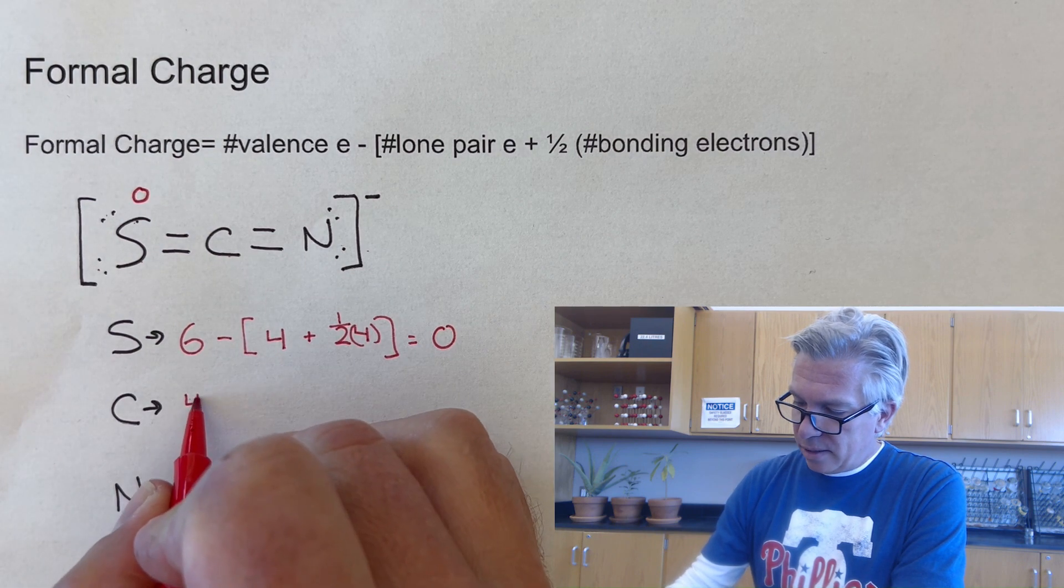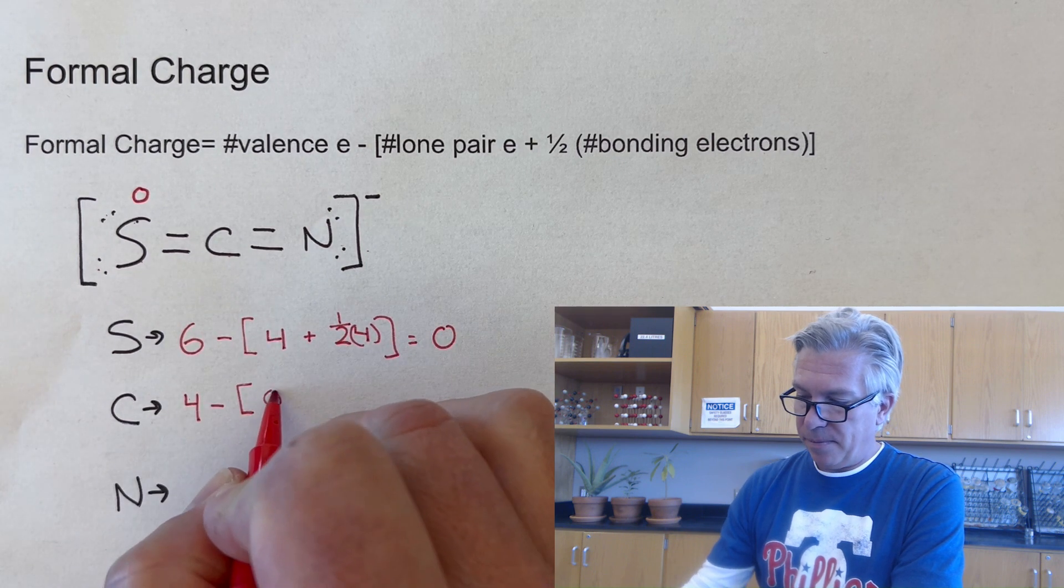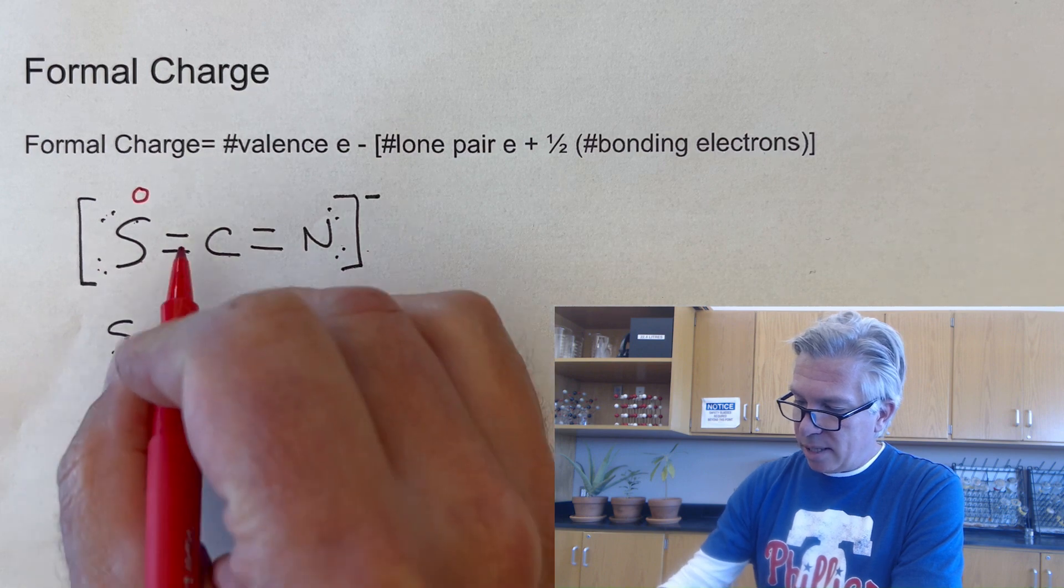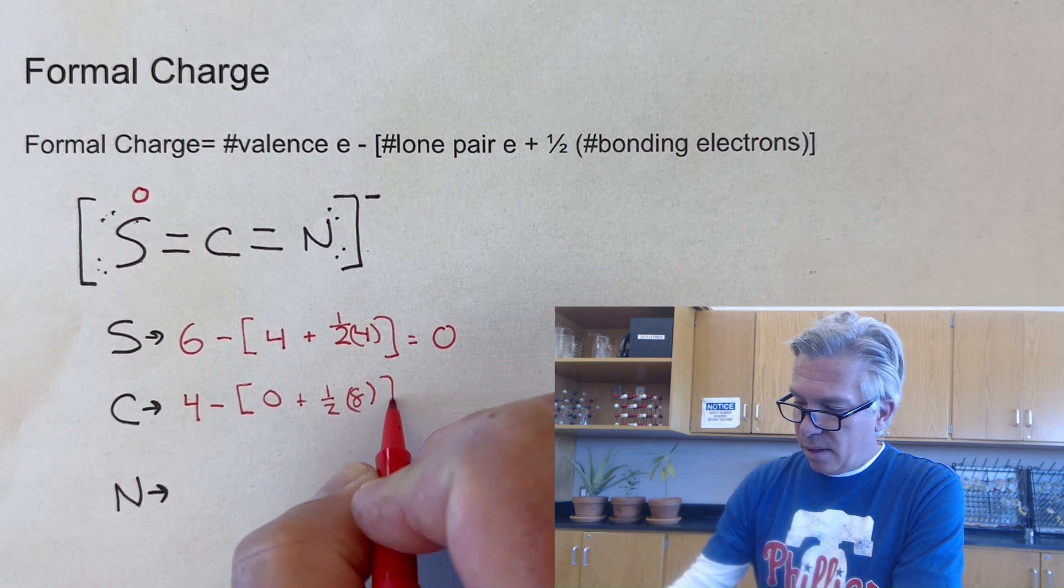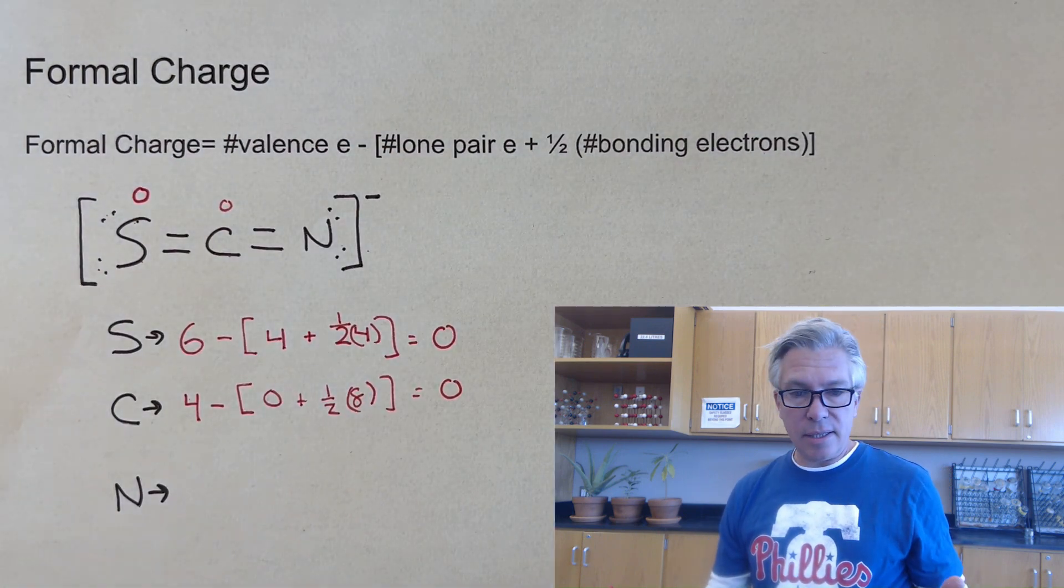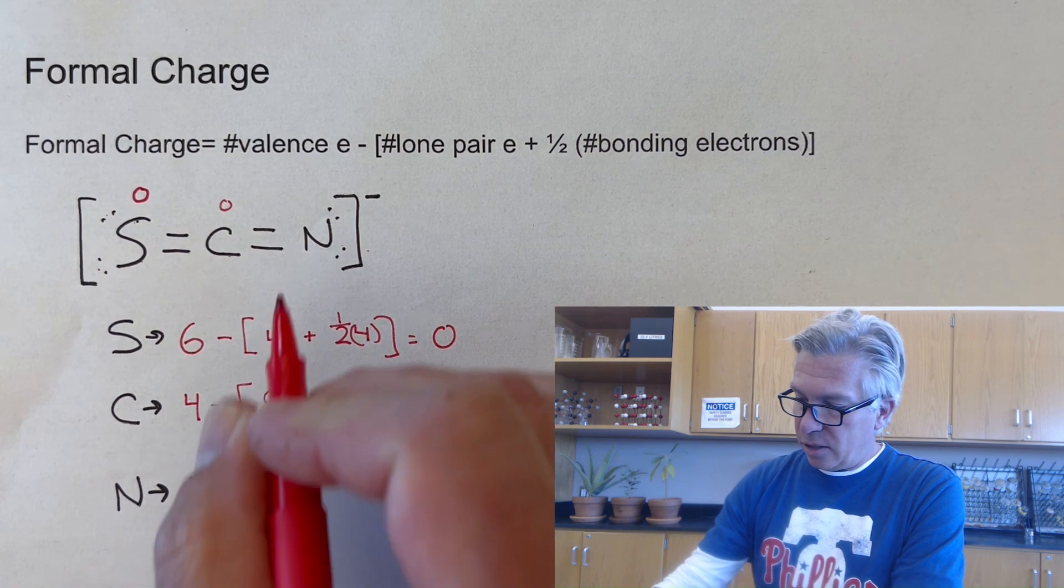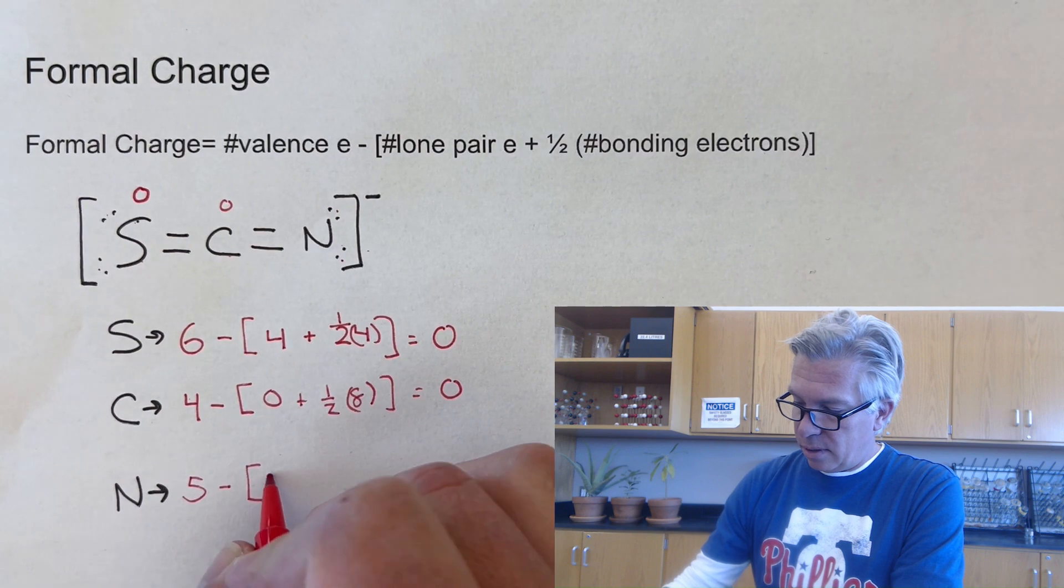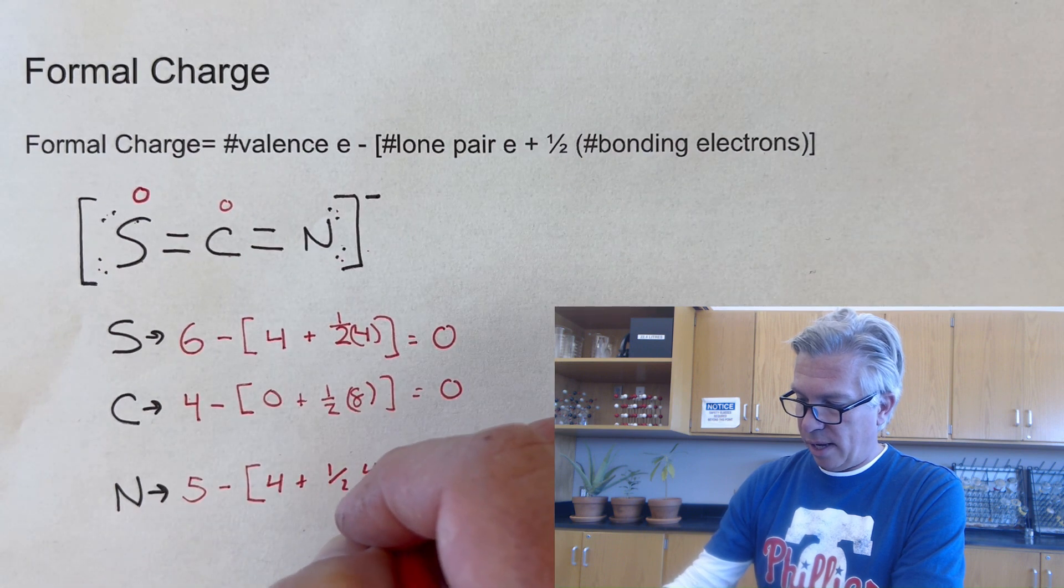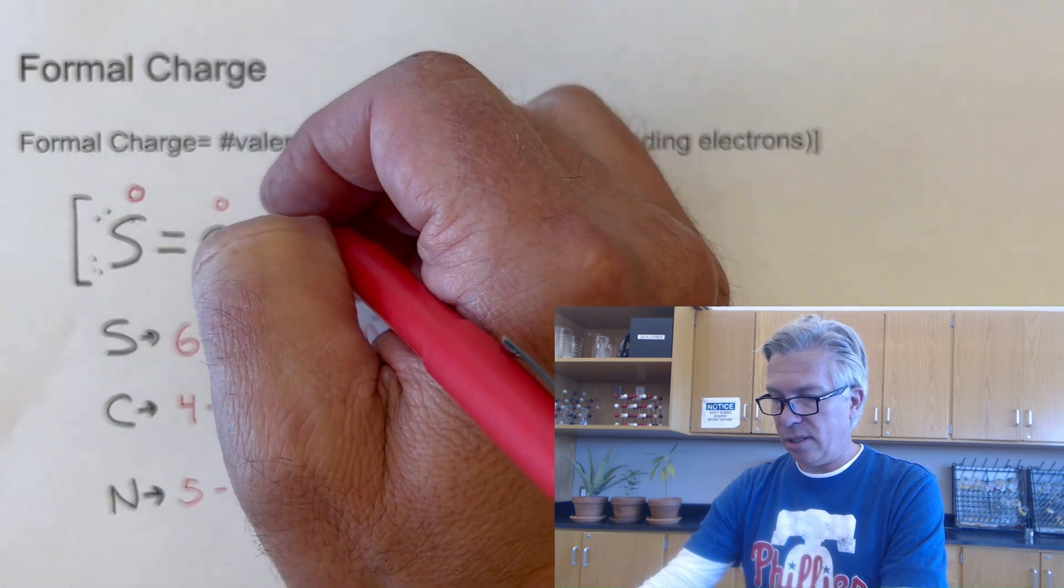Carbon will start with four valence electrons. That's how it begins. And it's got zero lone pairs and one half of its eight bonding electrons. It's got four bonds for a total of eight. And that will also work out to a formal charge of zero. And finally, let's do the nitrogen. Nitrogen starts with five. And this nitrogen has two, four lone pair electrons and also two bonds for a total of four electrons. So one half of four. And that gets to be a negative one. So this nitrogen is a negative one.